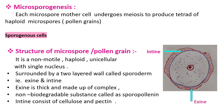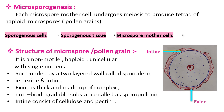Inside the pollen sac, sporogenous cells are produced. These sporogenous cells develop into sporogenous tissue, which is also called the microspore mother cell. These microspore mother cells undergo meiosis — a reduction division — in which from a single microspore mother cell, four haploid microspores or pollen grains are produced. When young, these pollen grains are present in a group called the pollen tetrad. On maturity, the pollen grains become separate.